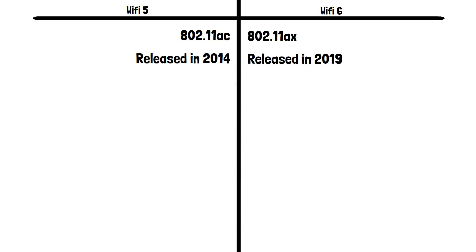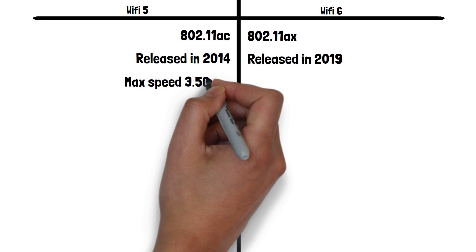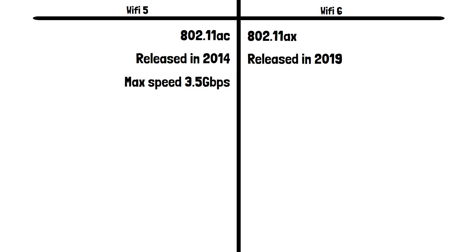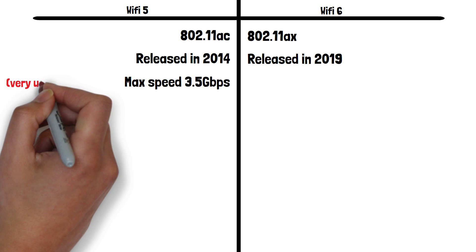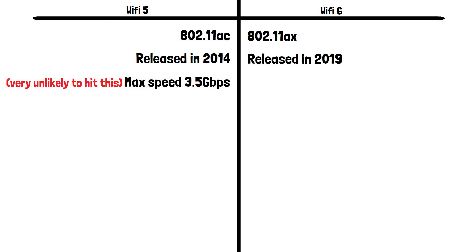Now let's look at speed. Wi-Fi 5 has a theoretical limit of 3.5 gigabits per second. It's worth noting you're very unlikely to get anywhere close to that unless you have an extremely fast speed coming into your router from your service provider and are in optimal conditions with no interference at all and nothing such as walls or furniture between your device and router.